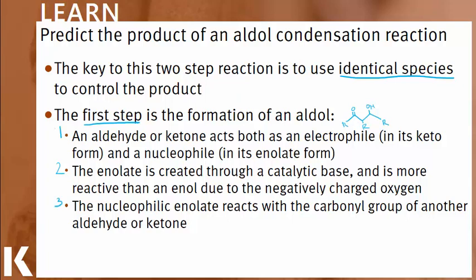Three, this enolate then reacts with the carbonyl of the initial keto group, which results in the formation of an aldol. Going back to the first bullet and the importance of identical species, since we have no way of controlling which species behaves as the electrophile and which will act as a nucleophile, identical species allows us to predict the product. Otherwise, two different reactants could result in multiple products formed in unpredictable ratios.